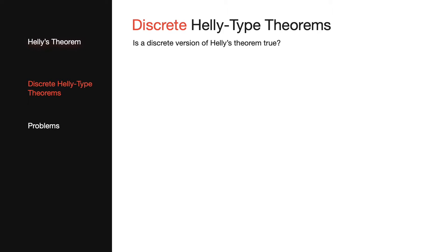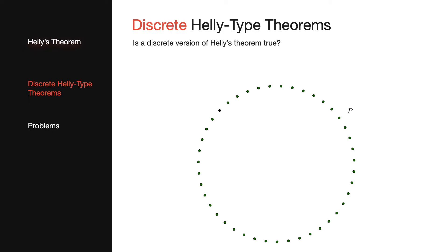It is natural to ask if a discrete version of Helly's theorem is true in the plane. Instead of requiring that every three convex sets intersect at some point in the plane, suppose that we require that they intersect at some point in a discrete set of points P. Then can we conclude that all the convex sets intersect at some point in P? Unfortunately, this is not true even if we require that every k of the convex sets intersect at a point in P for some large constant k.